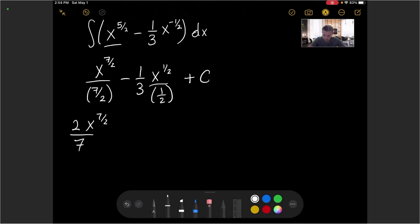If I flip and multiply with the 1 half, this is the same thing as multiplying by 2. So I can consider multiplying by 2 in the denominator and in the numerator. Those cancel, and I'll be left with 2 over 3, x to the 1 half, and then plus c.